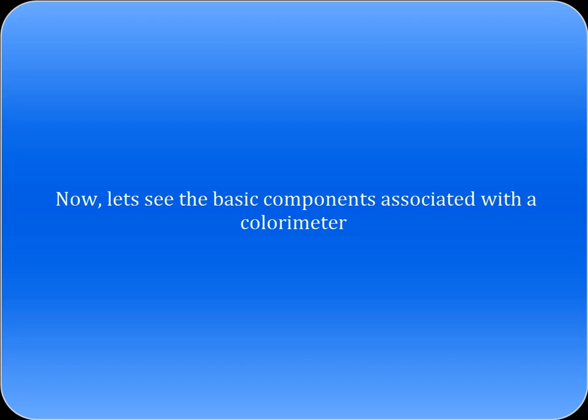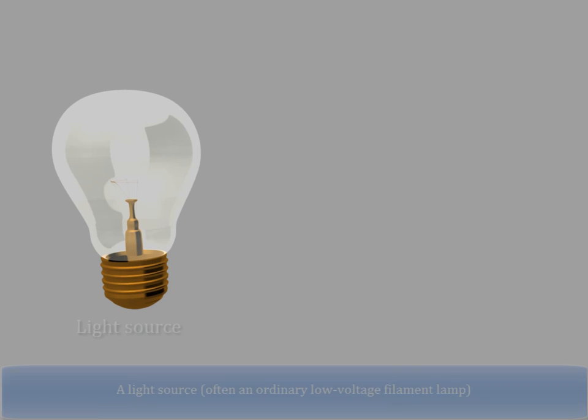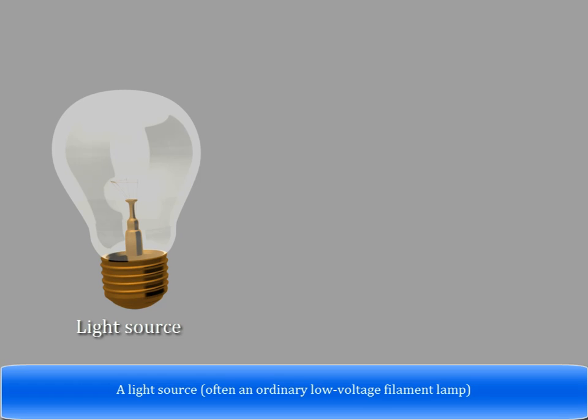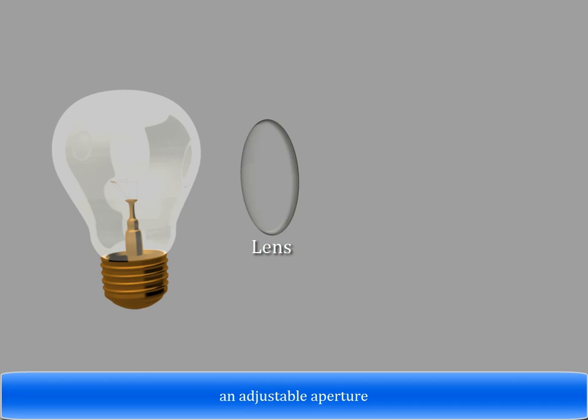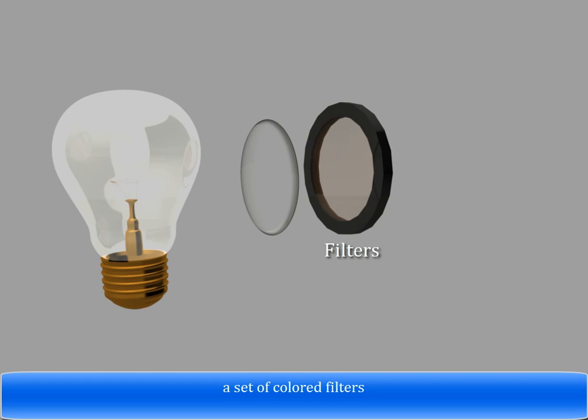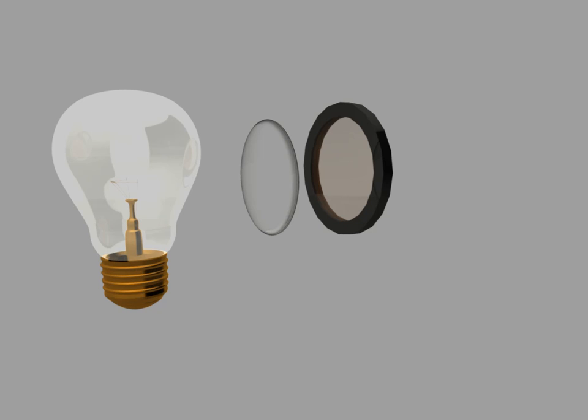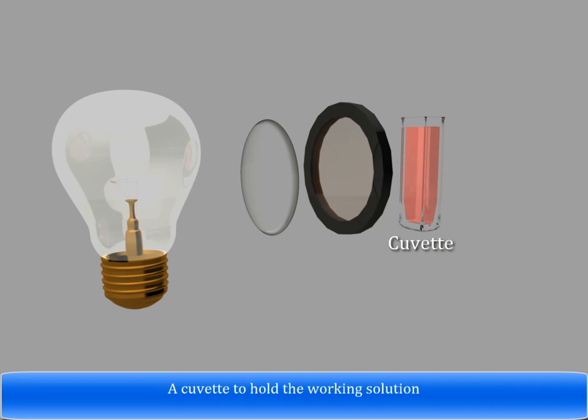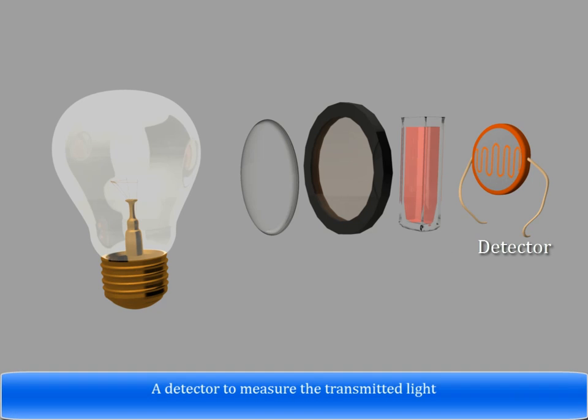Now, let's see the basic components associated with a colorimeter. A light source, often an ordinary low voltage filament lamp, an adjustable aperture, a set of colored filters, a cuvette to hold the working solution, a detector to measure the transmitted light.